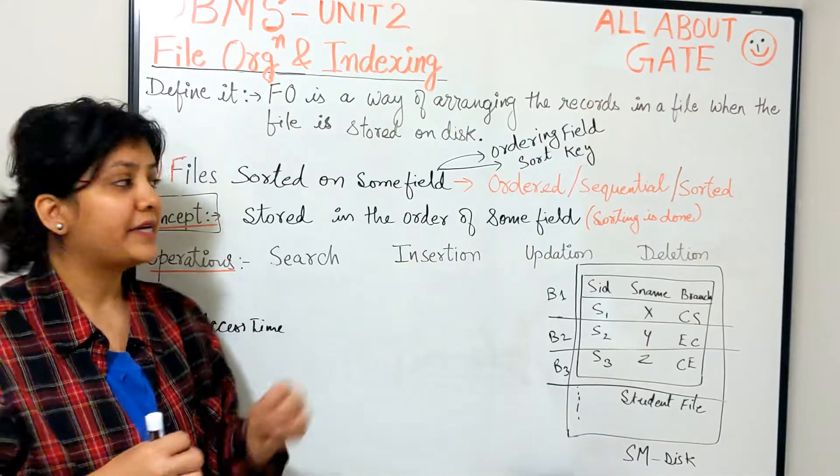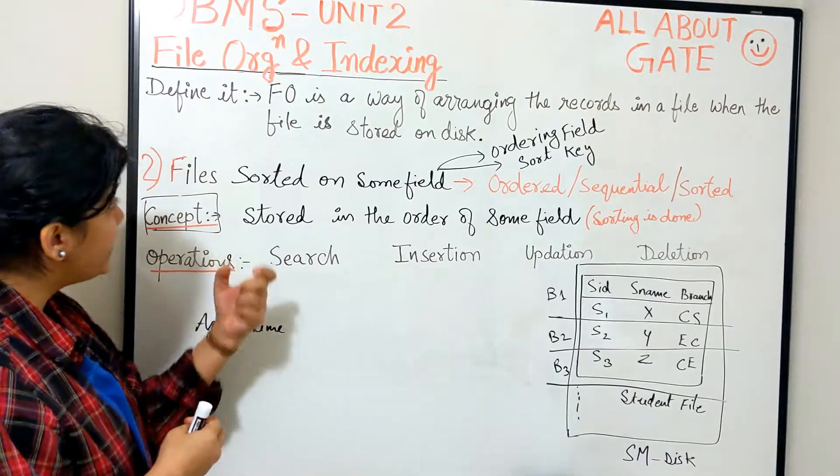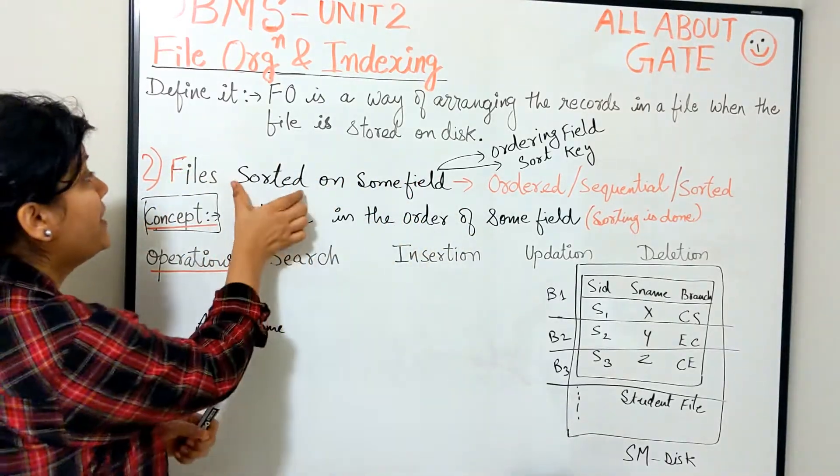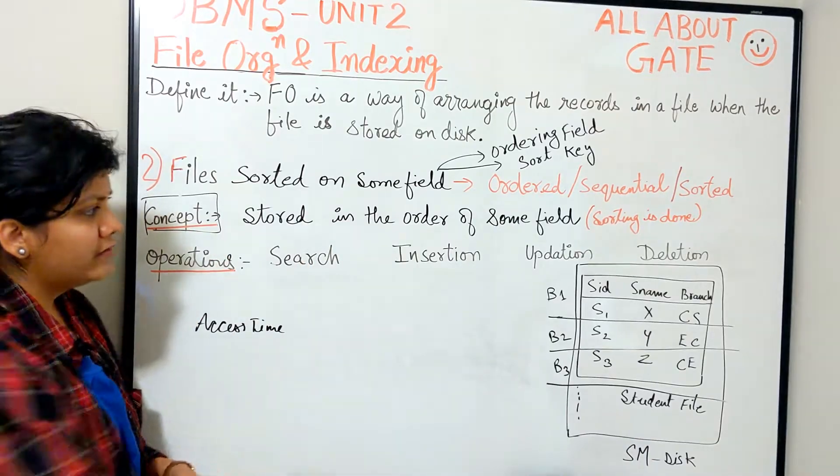But here in this type, we are actually going to store the records based on some field. Suppose we are selecting a field, let's take here an example: SID, student ID.